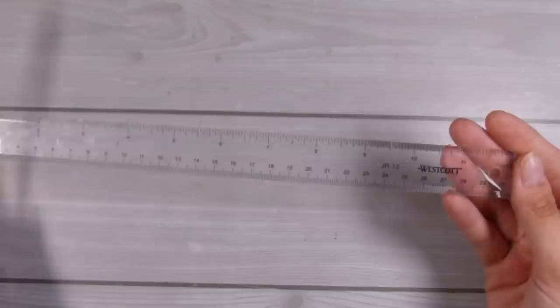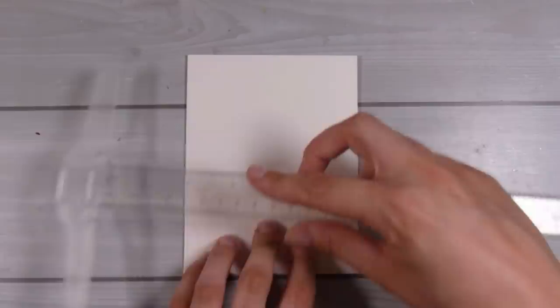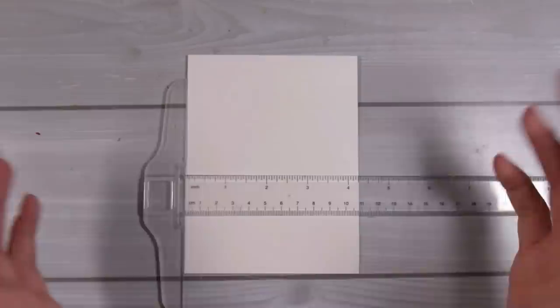Next up is this T ruler. This is a 30cm ruler, or 12 inches, and it just has this T at the end, which catches on the paper when you are measuring along things. For example, I can just put this on my piece of paper, and I can place my sentiment across, knowing that it's nice and straight, and I can just move it up and down and have it anywhere.